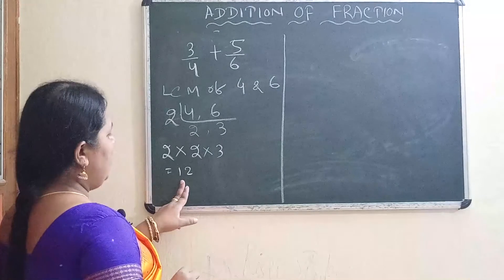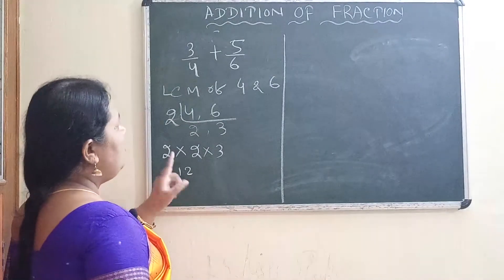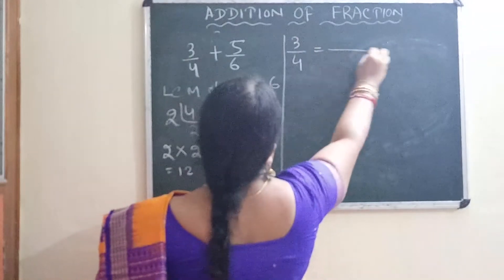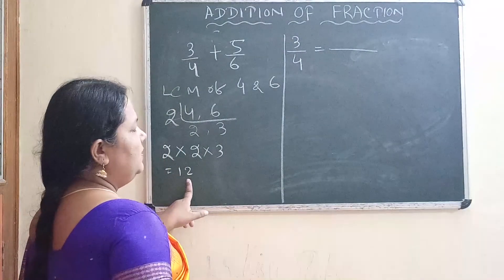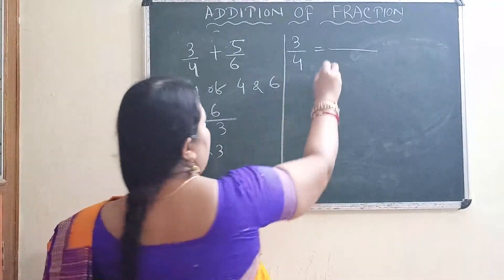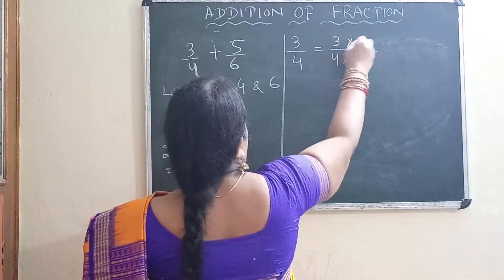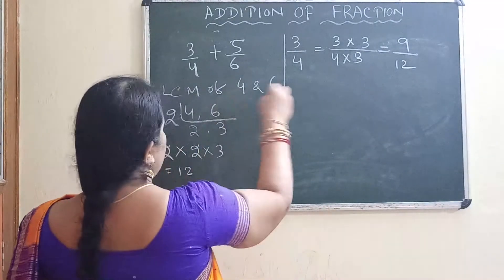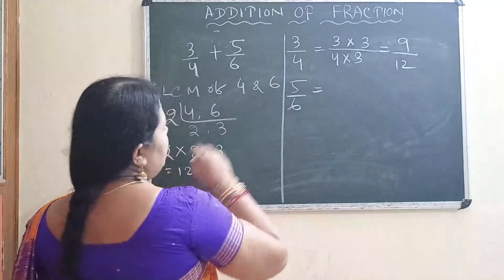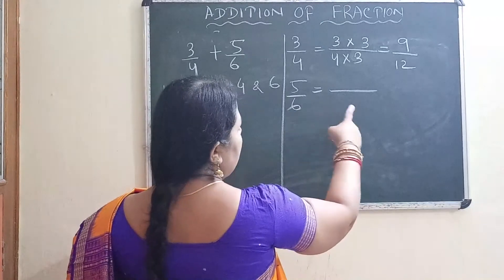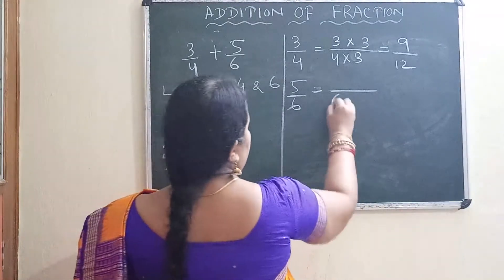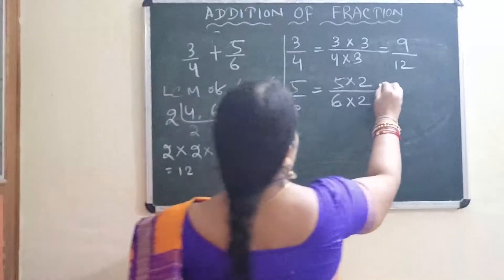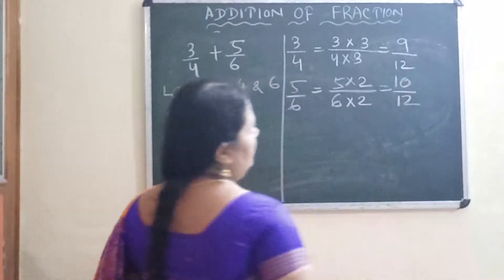This is the first step: find the LCM of the denominators. Second step: change all unlike fractions to like fractions. For 3 by 4 — to convert 4 to 12, divide 12 by 4 to get 3, so multiply numerator and denominator by 3: giving 9 by 12. For 5 by 6 — to convert 6 to 12, divide 12 by 6 to get 2, so multiply numerator and denominator by 2: giving 10 by 12.